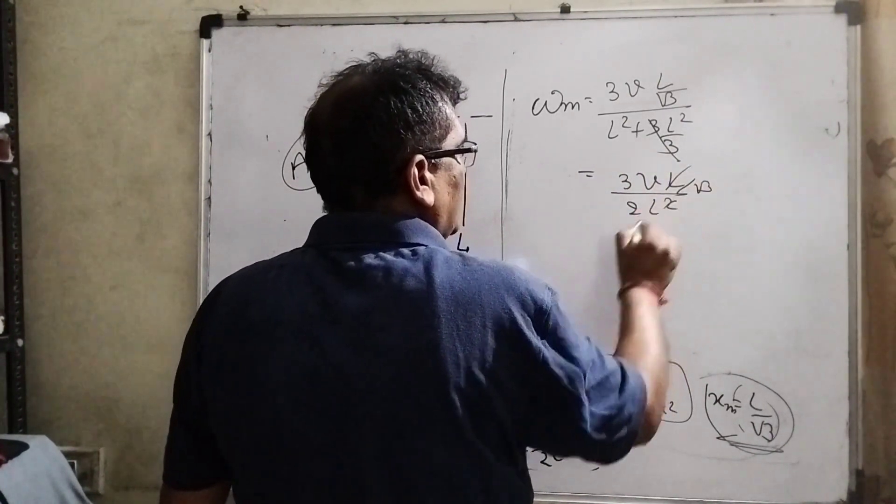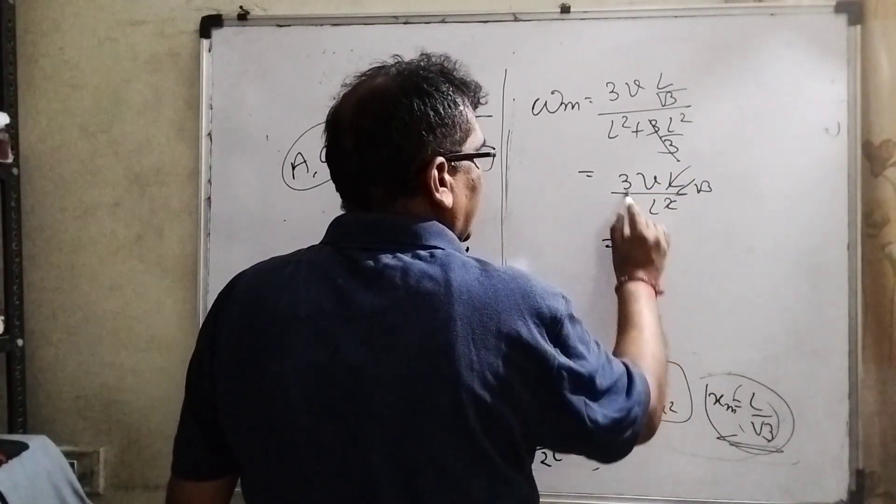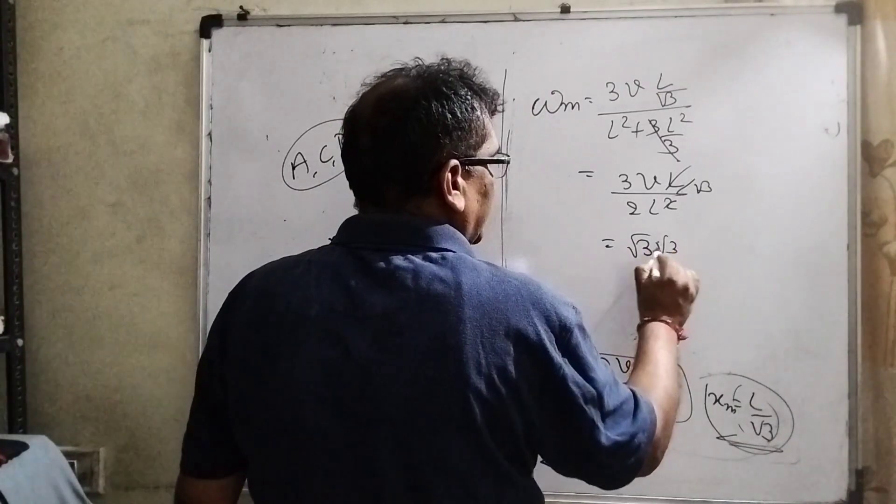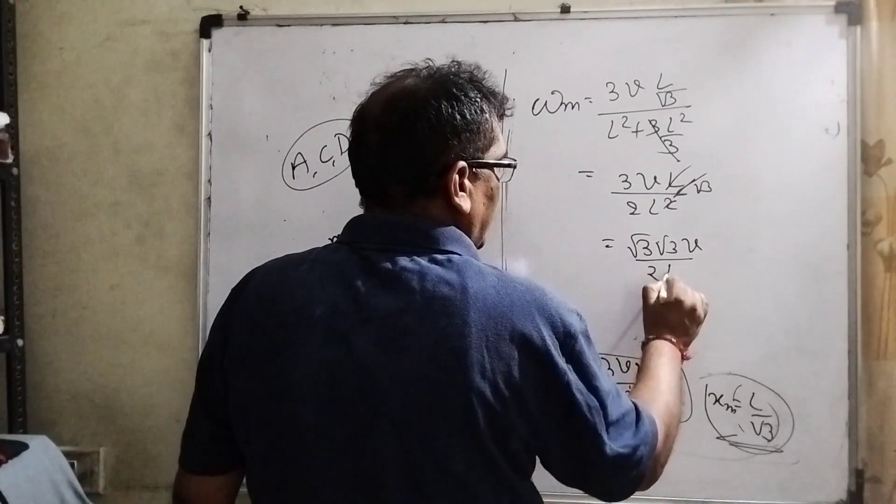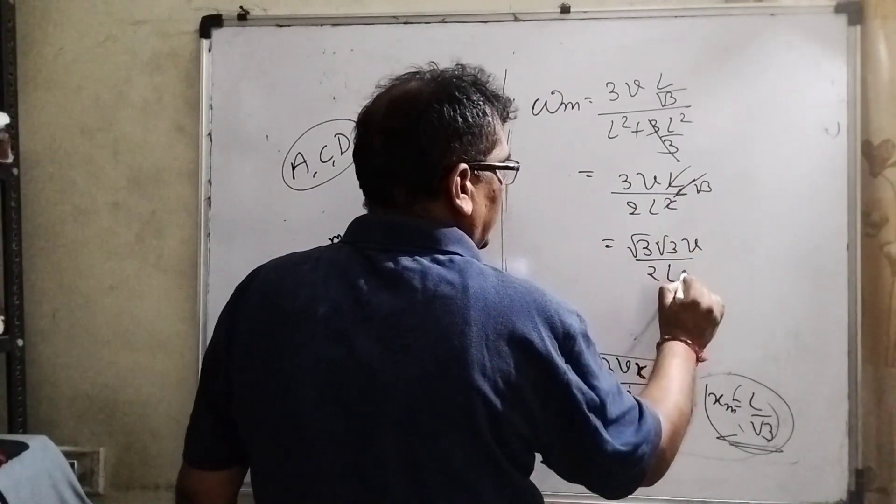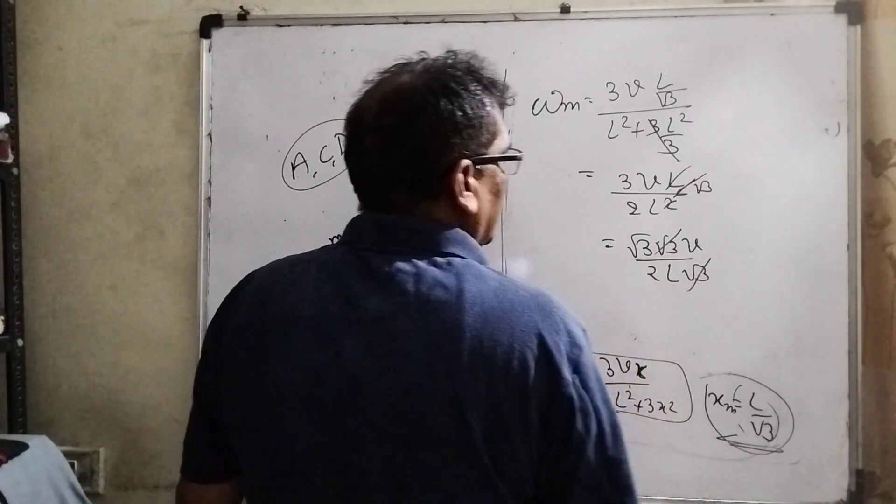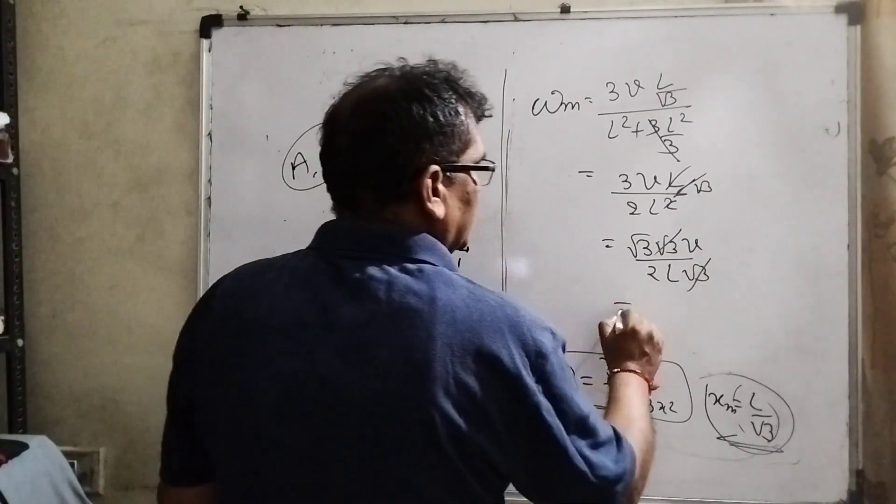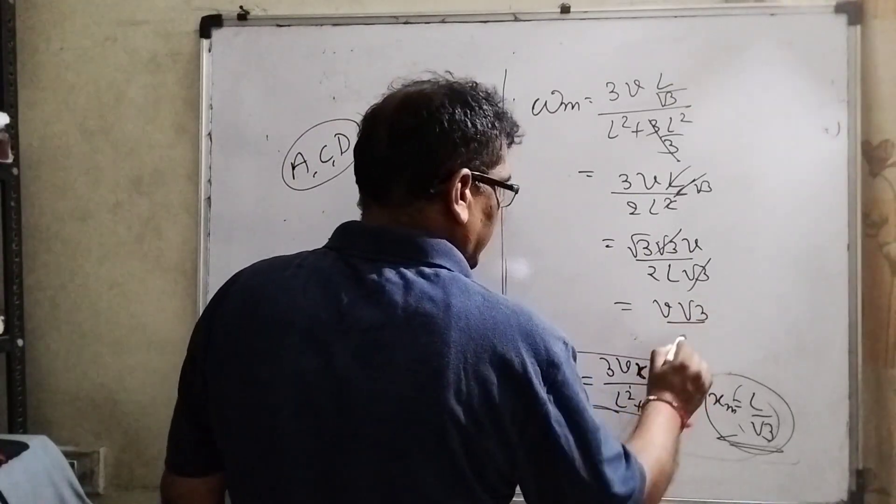L cancels out. 3 can be written as 2 times root 3 root 3. This is v by 2L and root 3. One root 3 cancels out and you can see that v root 3 by 2L.